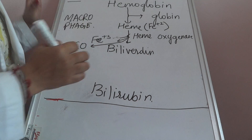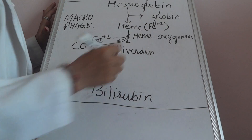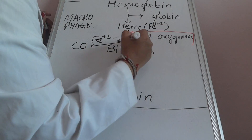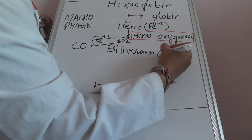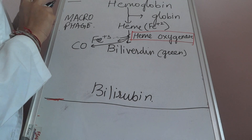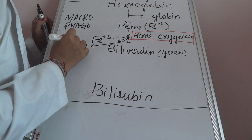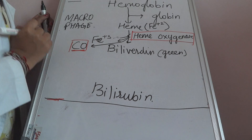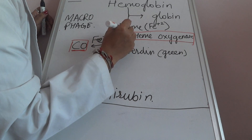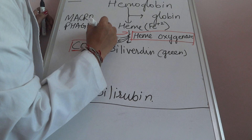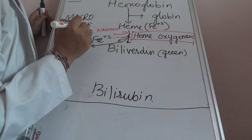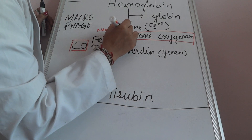When heme undergoes a reaction in the presence of heme oxygenase, it forms a green colour pigment called biliverdin. Iron is released in the form of ferric ions and carbon monoxide is also released. This reaction requires NADPH + H⁺ and, because it is a heme oxygenase, it will also require oxygen.